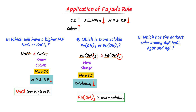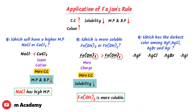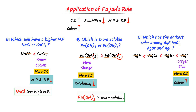Which silver halide has the darkest color — AgF, AgCl, AgBr, or AgI? The cation is the same (silver), so we consider the anion. The size of iodide is the largest and fluoride is the smallest. So the order of increasing covalent character is AgF < AgCl < AgBr < AgI. Since covalent character increases color-imparting ability, silver iodide has the darkest color.